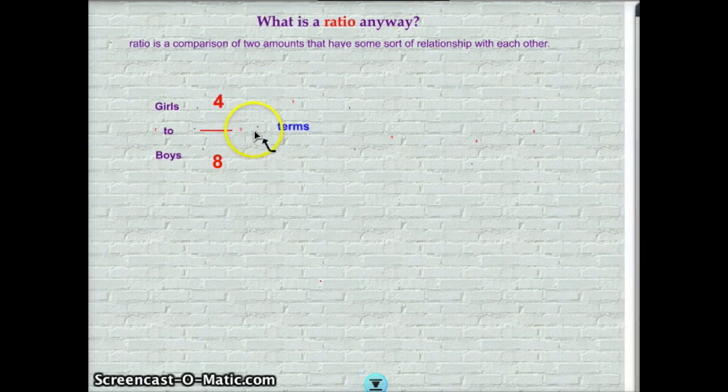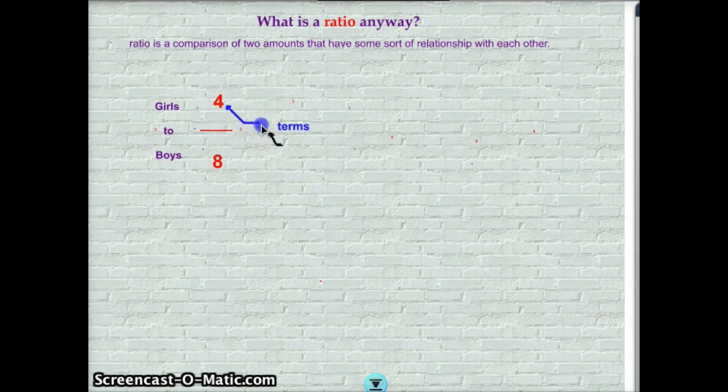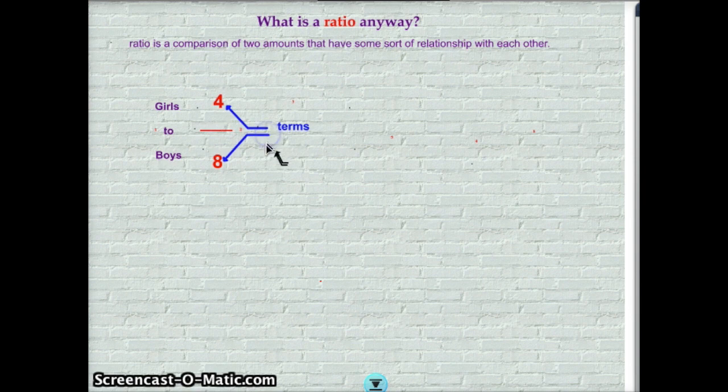These amounts are called terms. And so for the girls, there are four of them. And for the boys, there are eight of them. Those two terms make up what we call a ratio, and it's comparing the amount of girls to the amount of boys.